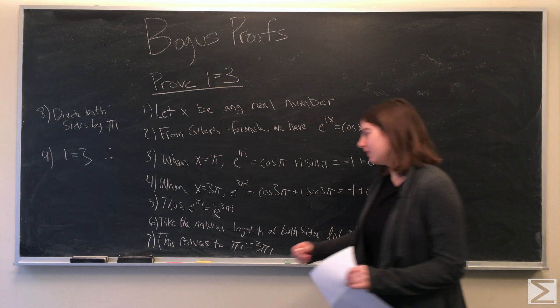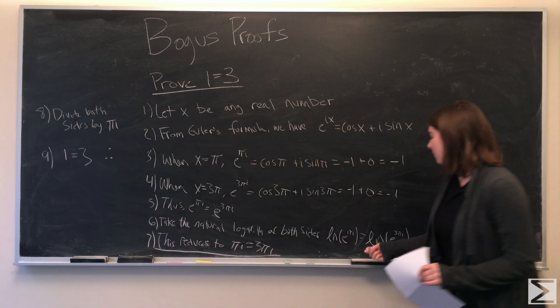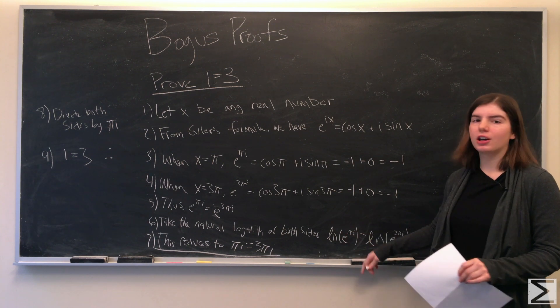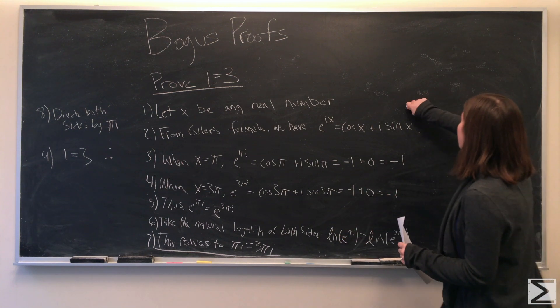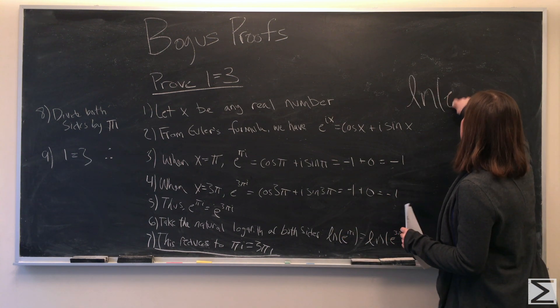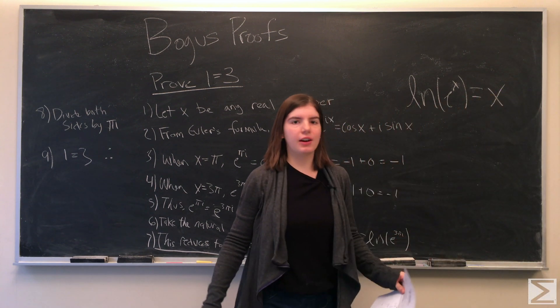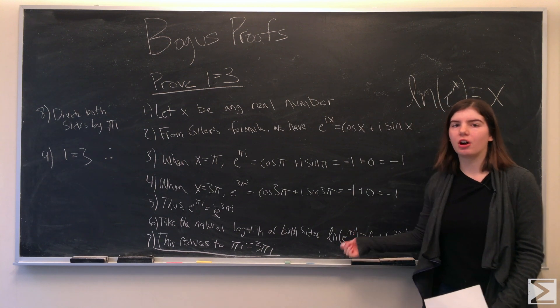Our error is in line 7. We have to remember that i is a complex number, and when you take the natural log of a complex number, it's actually a multi-valued function. So the natural log of e to the x is only equal to x if x is a real number. In our case, we're taking the natural log of a complex number.